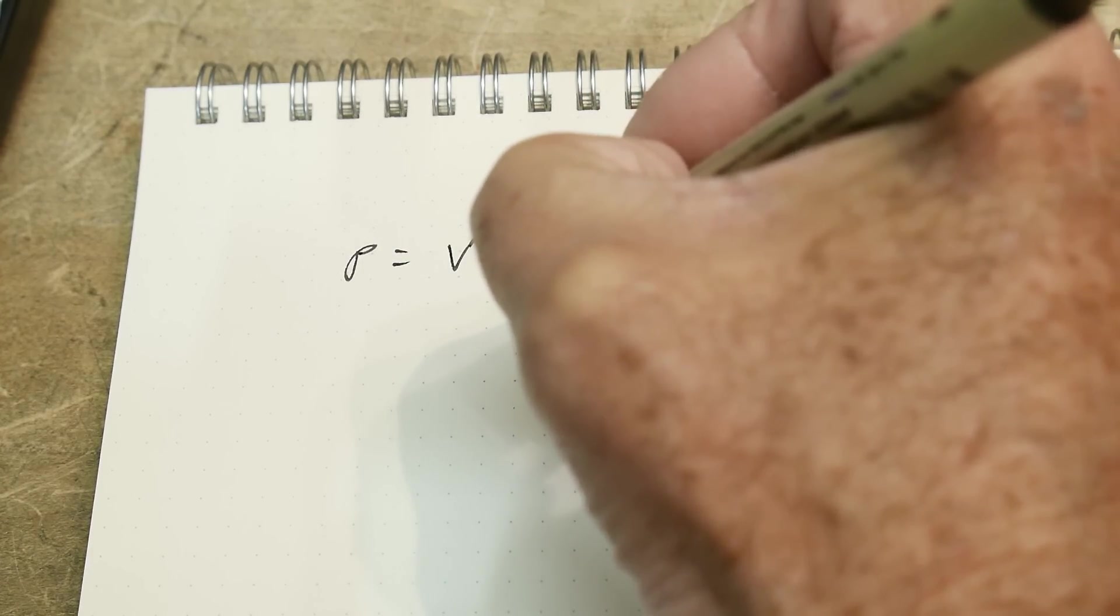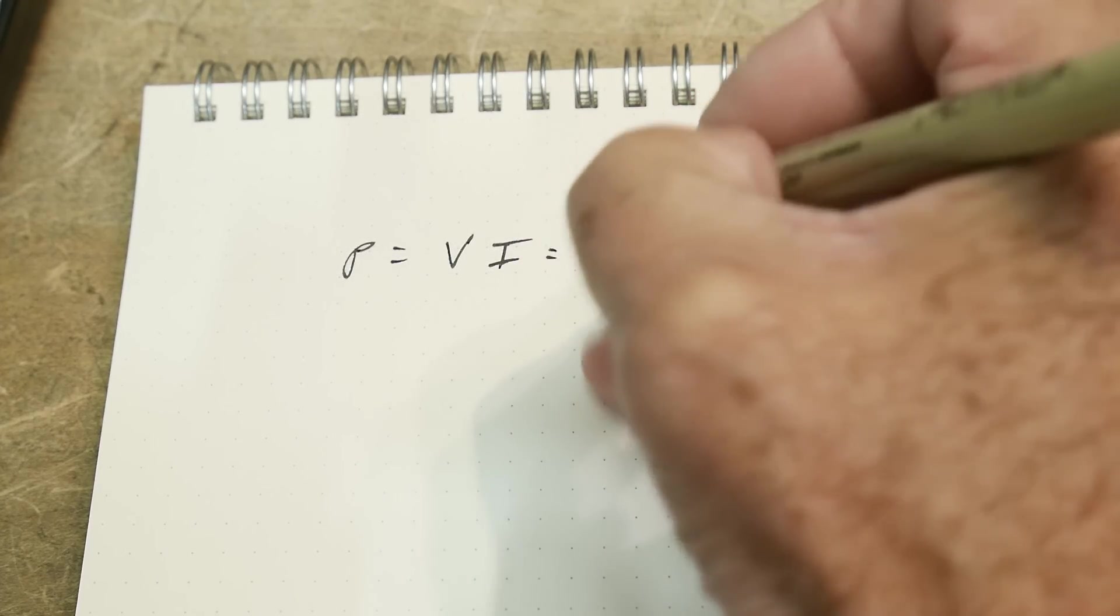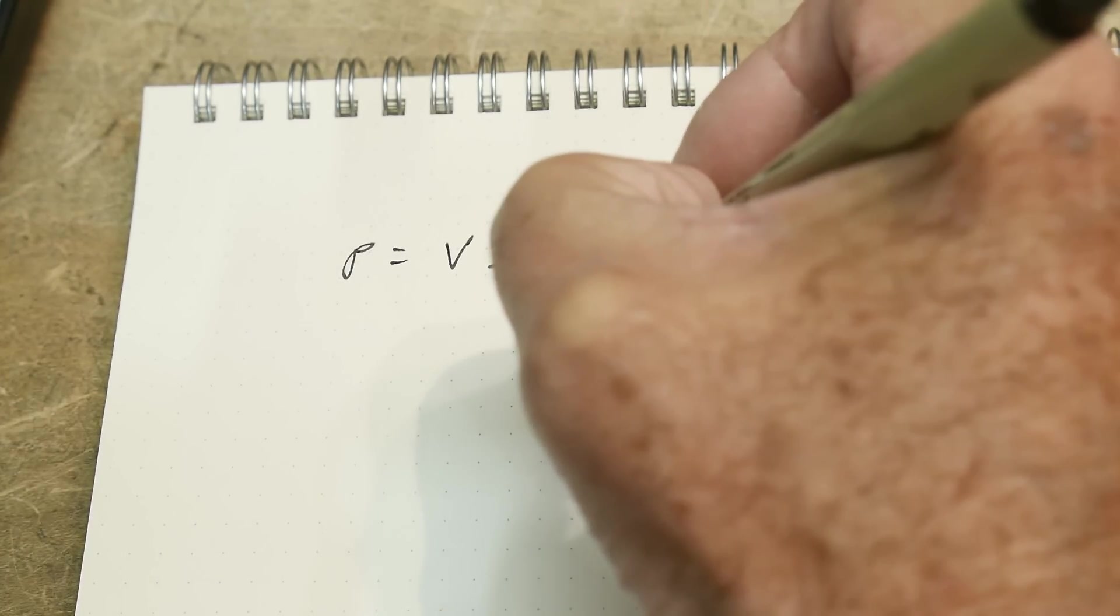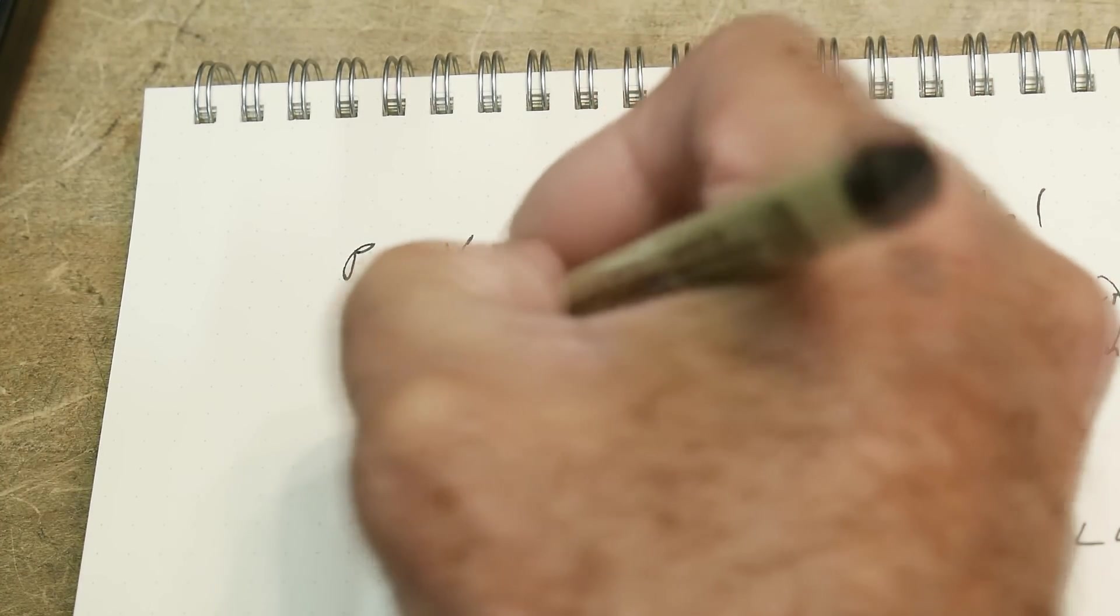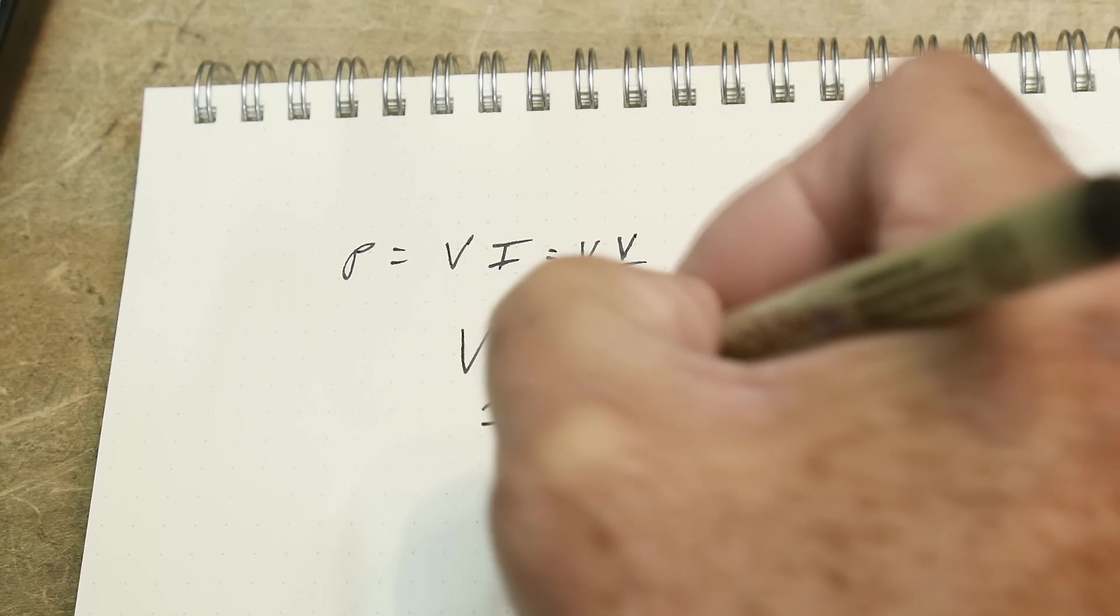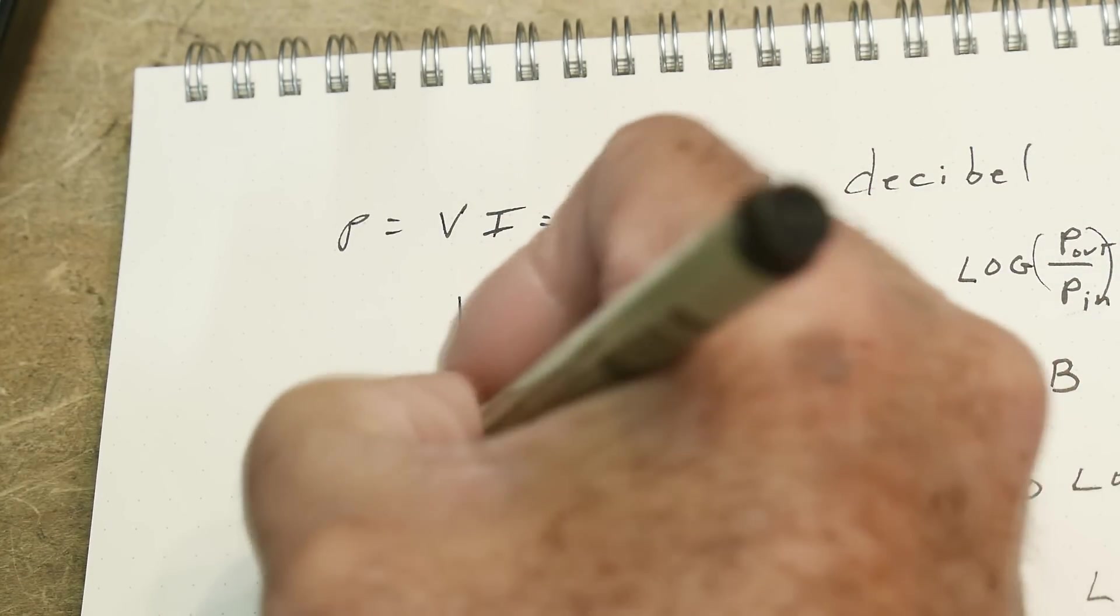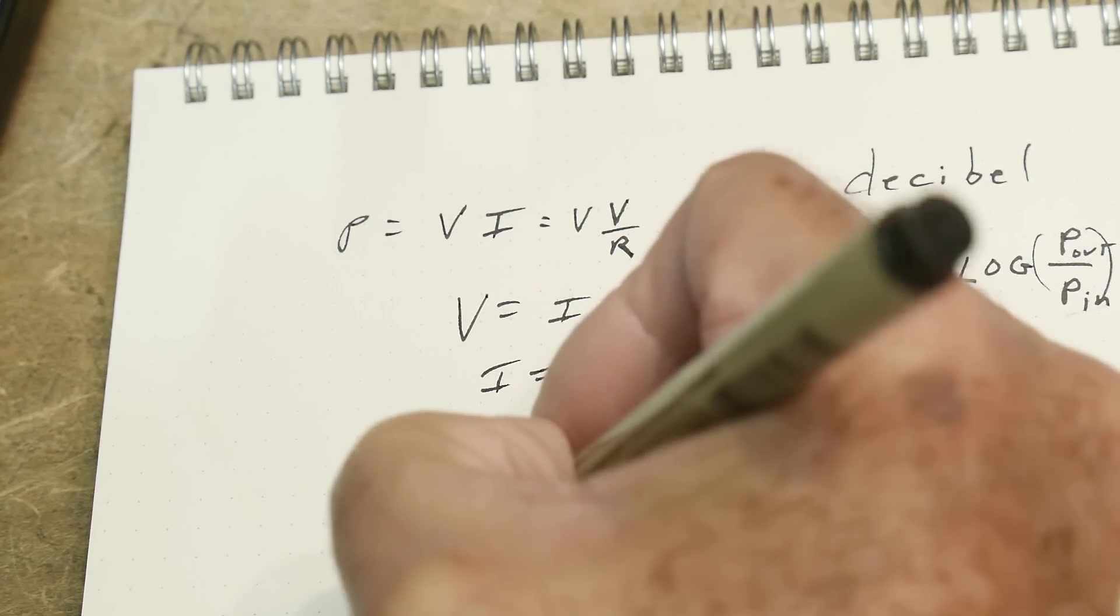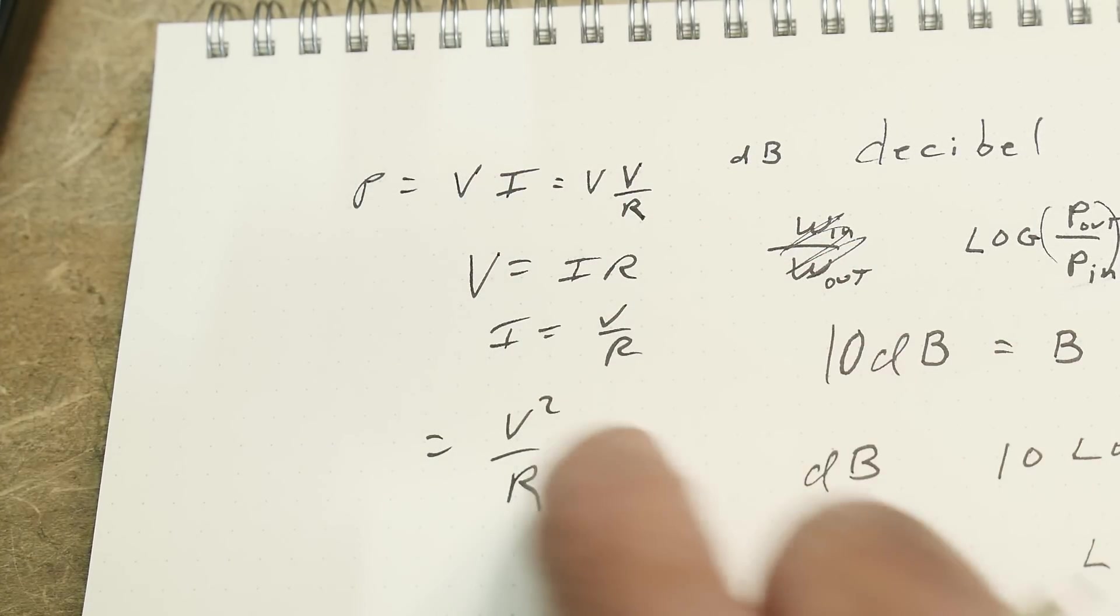What is power? Power equals volts times current. What is current? Current is volts divided by resistance. Remember volts equals IR, so I equals V over R.